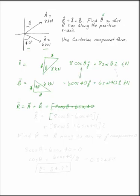If I add the j's, I have 8 cosine theta minus 6 cosine 40 in the j direction. And adding the i's, you have 8 sine theta plus 6 sine 40 in the i direction. Now that's R, that's your resultant.